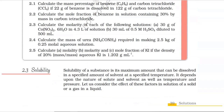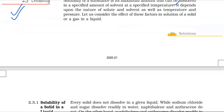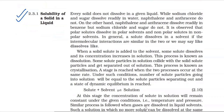2.3 Solubility. Solubility of a substance is its maximum amount that can be dissolved in a specified amount of solvent at a specified temperature. It depends upon the nature of solute and solvent as well as temperature and pressure. Every solid does not dissolve in a given liquid. While sodium chloride and sugar dissolve readily in water, naphthalene and anthracene do not. On the other hand, naphthalene and anthracene dissolve readily in benzene but sodium chloride and sugar do not.